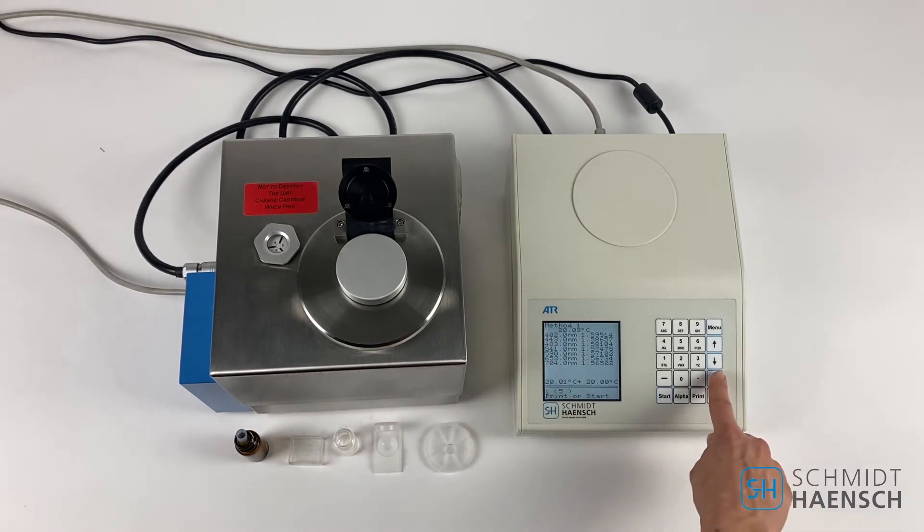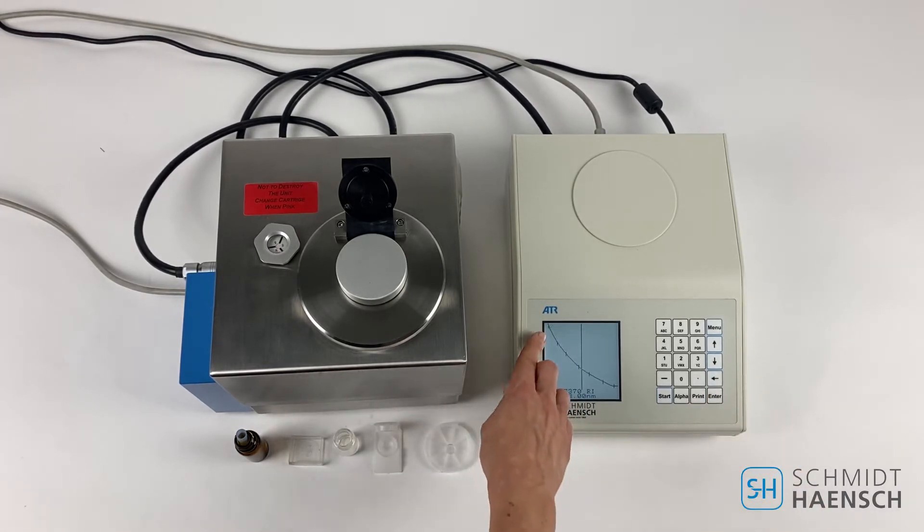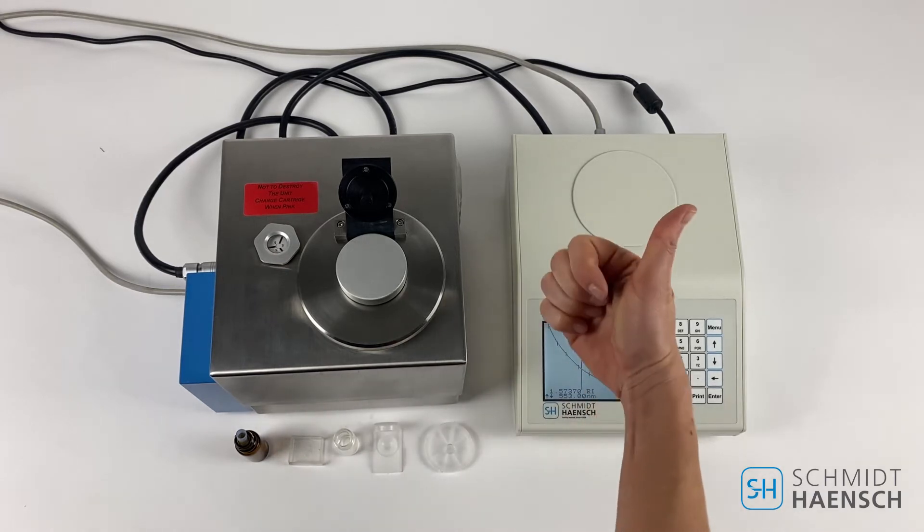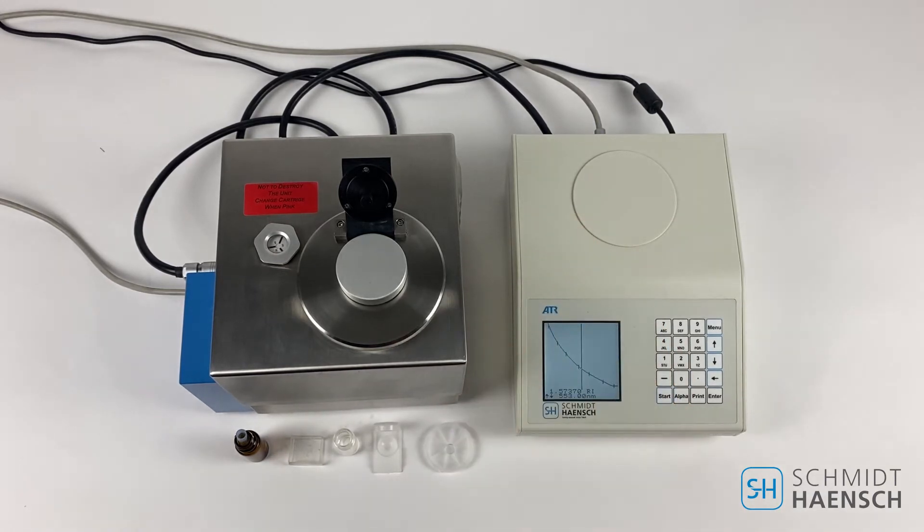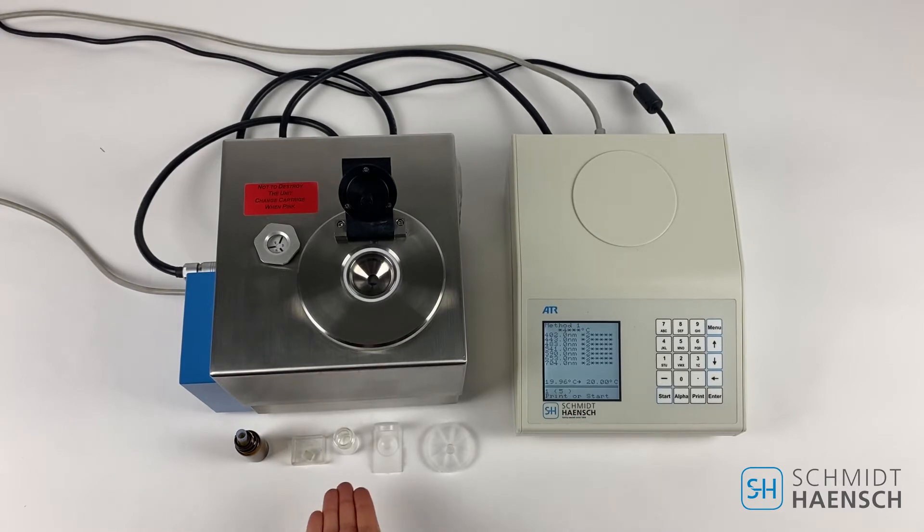After about 20 seconds you can expect your measuring results in table form. On the left side wavelength is displayed, on the right side the refractive index. Press the arrow button on the right side to look at the dispersion curve to ensure the measurement has been performed correctly.